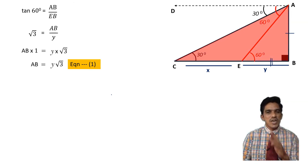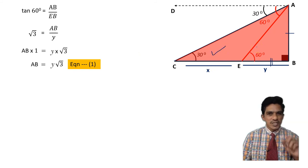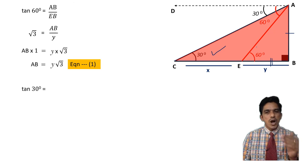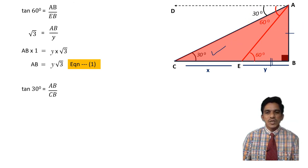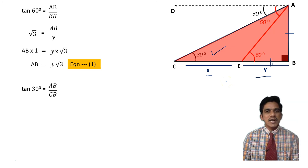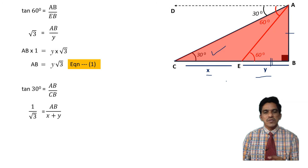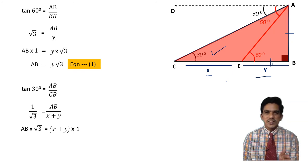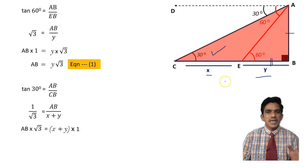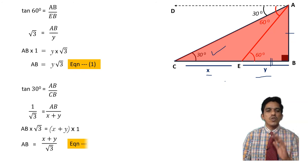Now consider the larger triangle ABC with angle 30 degrees. Tan 30 equals AB over CB. CB equals X plus Y. So 1 over root 3 equals AB over (X plus Y). Cross-multiplying: AB times root 3 equals X plus Y. Therefore AB equals (X plus Y) divided by root 3. This is equation 2.